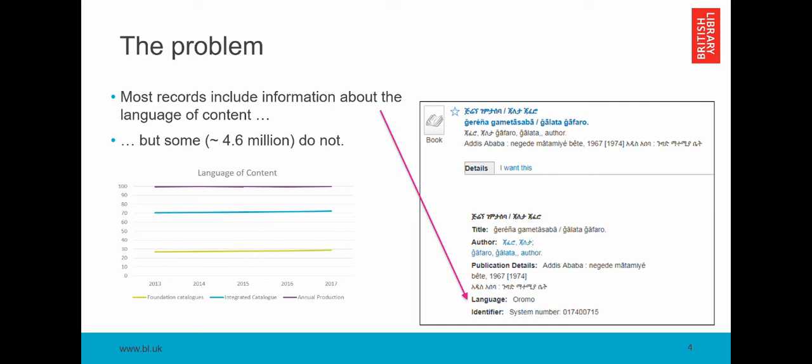So the British Library holds millions of resources and we have metadata records describing those resources. But as of 2017, 4.6 million of those metadata records didn't include any information about what language the resource was written in. Typically, those metadata records are part of our legacy metadata. So they describe collections that have perhaps been inherited from the British Museum or other older collections. And back in the days of the British Museum Library, the catalog was pretty much held in the librarian's head and a user who wanted to find all of the Persian books relating to geometry of the circle, for example, would go to the librarian, tell him or her what they wanted, and the librarian would go and find the books.